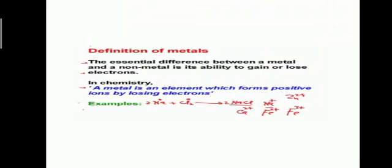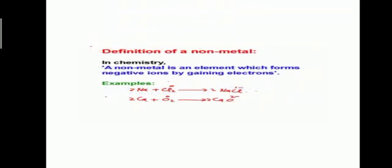Now, the differences between metals and non-metals. The essential difference is the ability to gain or lose electrons. A metal is an element which forms positive ions by losing electrons — that is, cations, for example sodium chloride. A non-metal is an element which forms negative ions by gaining electrons — that is, anions.